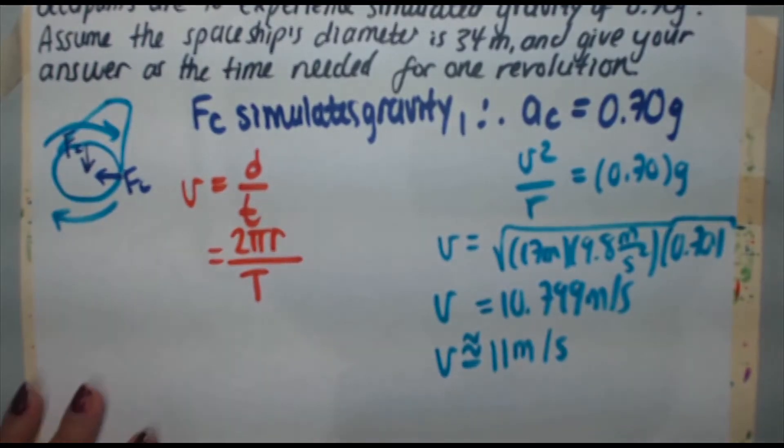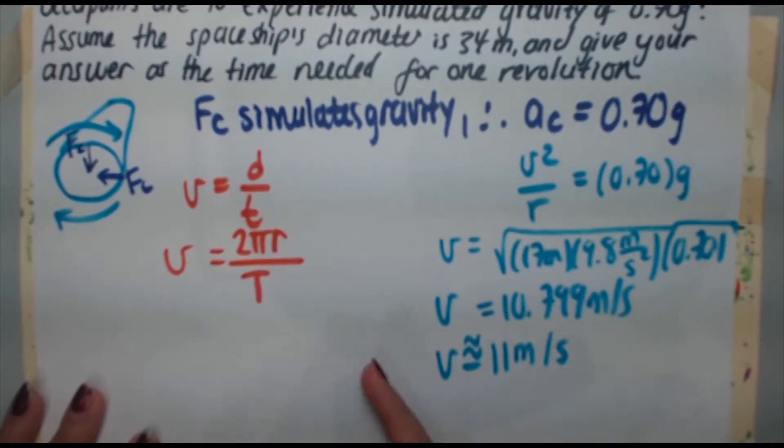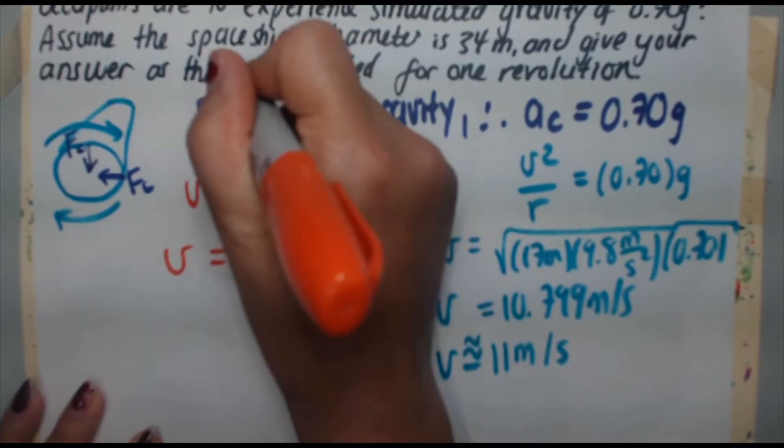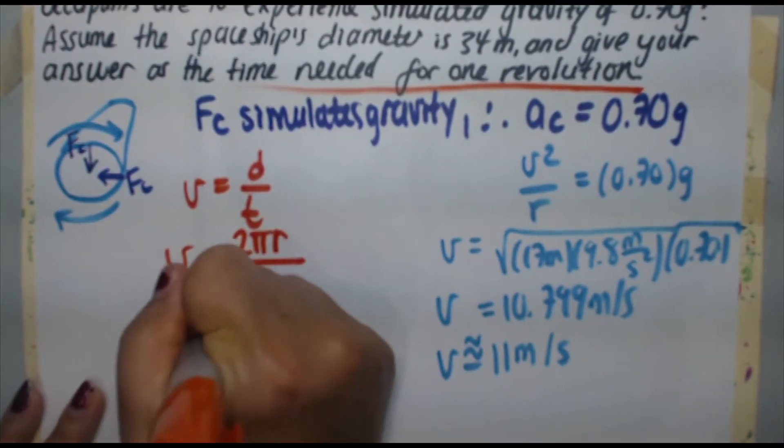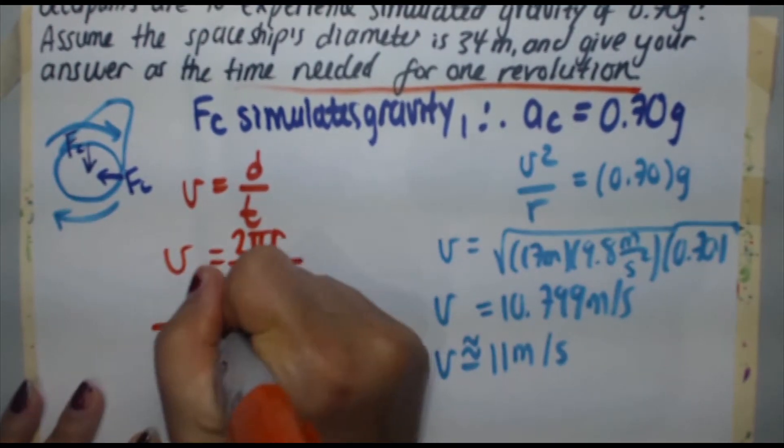We're looking for capital T, the time needed for one revolution, so all you need to do is switch places with T and v. T is equal to 2πr over v.